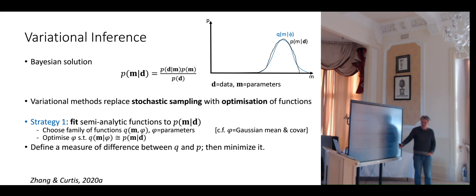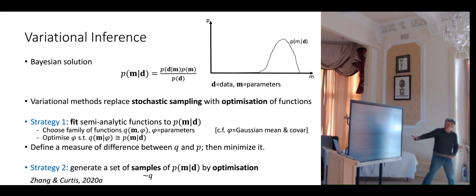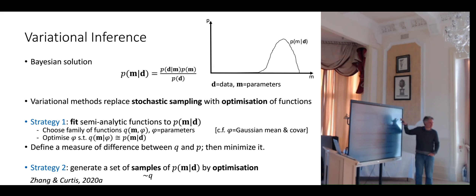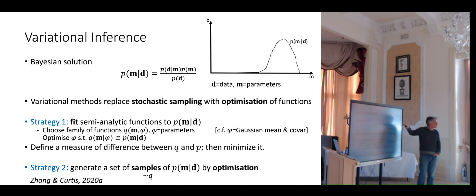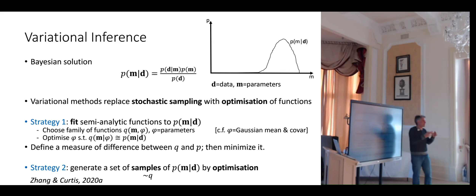There are two strategies. The first: take an analytic form and fit it. The second: take some random or deterministic samples from your initial distribution — your initial estimate of the posterior could just be your prior — and describe those by an implicit function, such as a neural network or a stochastic differential equation, then move those samples around so they optimally distribute according to the posterior.